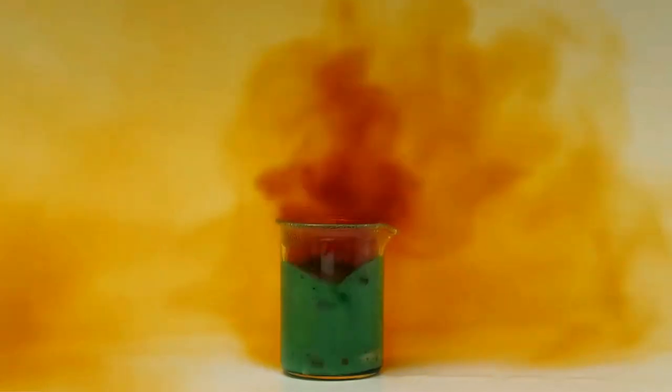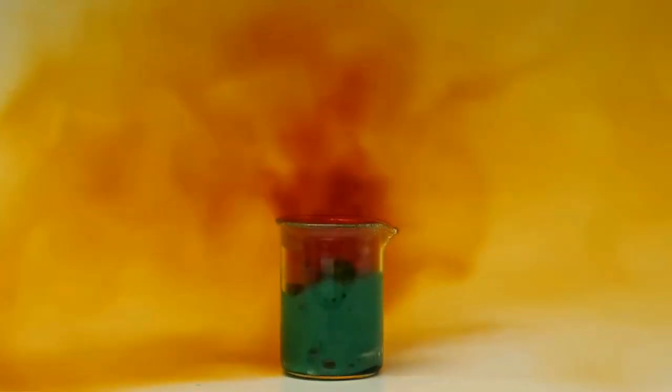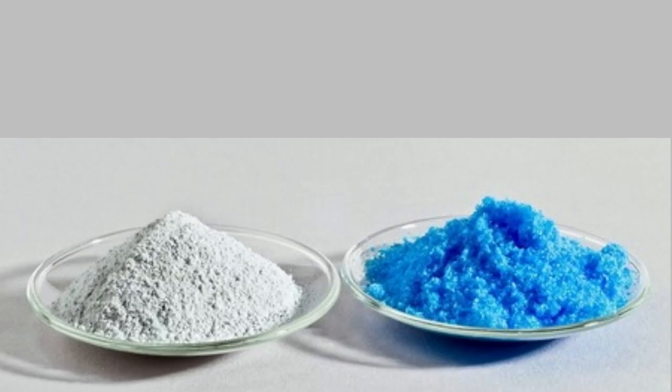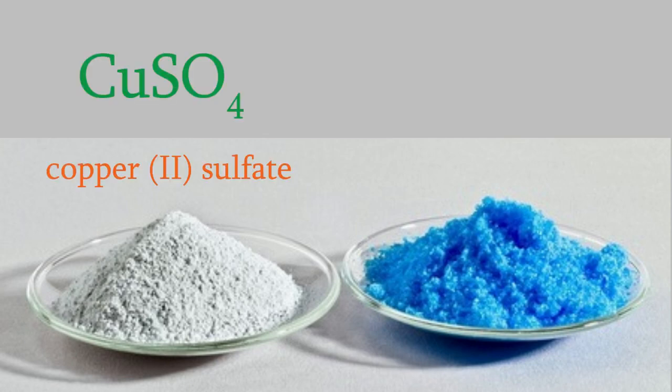We're almost done with our discussion of how to name compounds and write their formulas, but there are a couple more things to know. First, it turns out that many solid compounds actually have water bound in their crystal structure. For example, these two compounds are both copper sulfate, but the one on the left contains molecules that are simply CuSO4. But in the compound on the right, there are actually water molecules attached to each copper sulfate molecule. If you were to touch this substance, you'd find out that it isn't wet. The water molecules are actually part of the structure of the crystal.